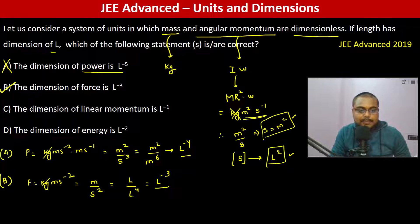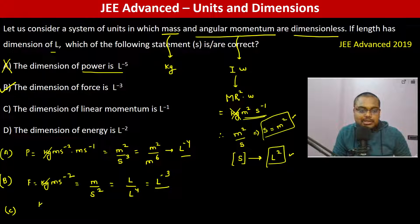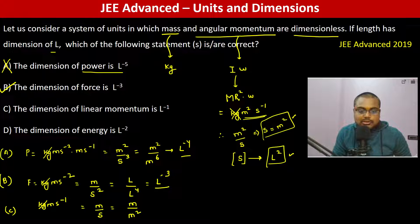So options B and C are correct. Now the dimension of linear momentum: linear momentum is kg·m/s. kg is dimensionless, meter per second — second is L², so this becomes L/L², which is L⁻¹. So this option is also correct.